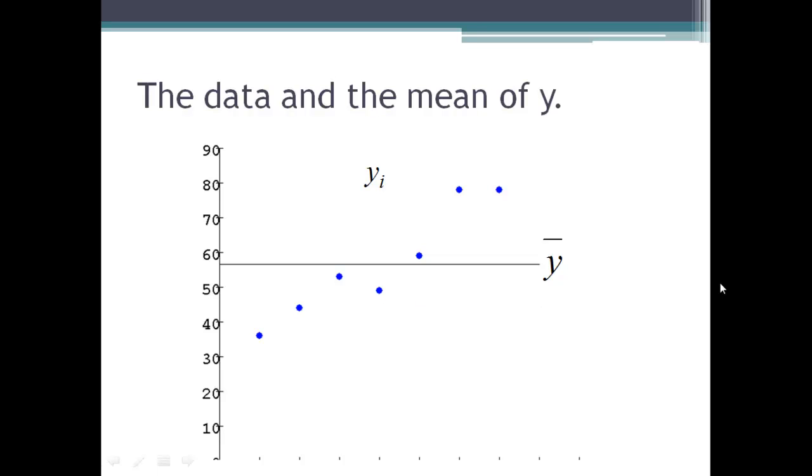First of all, let's just look at some values of y, the y sub i's, that's all the blue dots, and then the mean of the y's, that's just the line across the middle here.